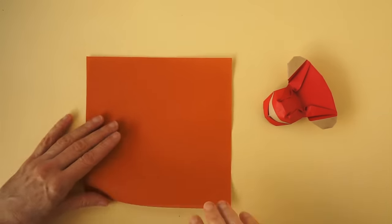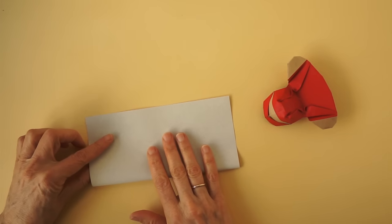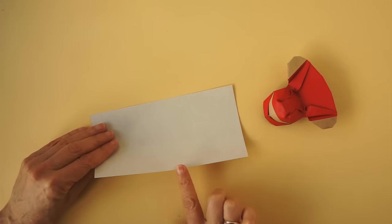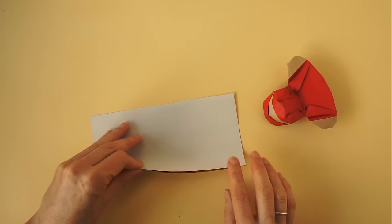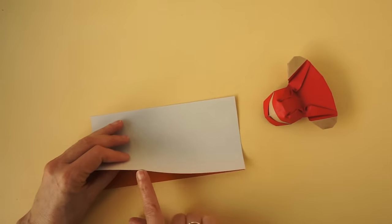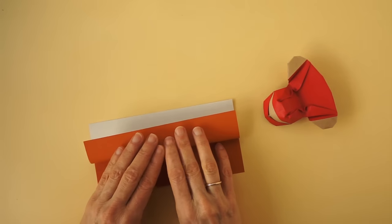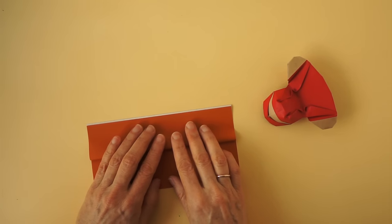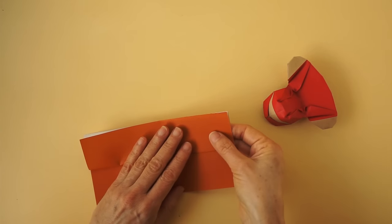Fold in half. Flip the paper so that this edge is up. We are going to bring this edge up to the folded edge. We are going to go a little beyond that edge, just a couple of millimeters.